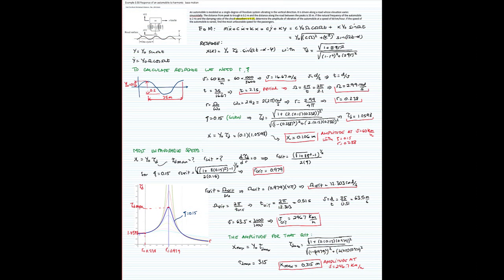In this final slide, I show the solution for the whole problem. We first found the amplitude for a condition of 60 kilometers per hour, and then the critical amplitude for 246 kilometers per hour.